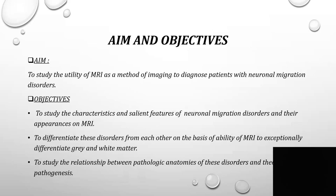The aim of the study is to evaluate the utility of MRI as a method of imaging to diagnose patients with neuronal migration disorders. Our objectives are to study the characteristics and salient features of neuronal migration disorders and their appearances on MRI, to differentiate these disorders from each other based on MRI's ability to exceptionally differentiate grey and white matter, and to study the relationship between pathologic anatomies and their theories of pathogenesis.